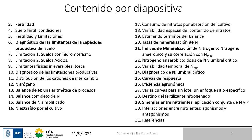La primera parte consiste en los conceptos de fertilidad y de diagnóstico de las limitantes de la capacidad productiva, que es básicamente lo que nos interesa para manejar en nuestro agroecosistema. Después vamos a hacer un repaso de las limitantes de la capacidad productiva del suelo para internarnos directamente en el primero de los elementos más importantes como limitante: el nitrógeno. Dentro del nitrógeno vamos a describir los principales métodos de diagnóstico, el balance de nitrógeno, el umbral crítico de nitrógeno, las estimaciones de los términos del balance y el uso de algunos índices de mineralización.